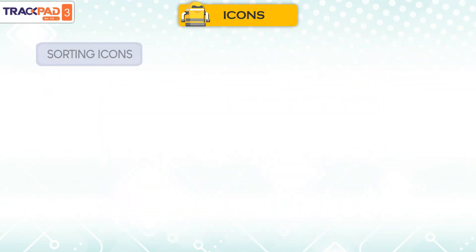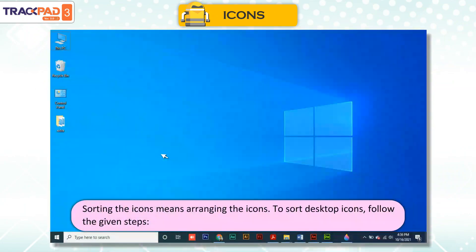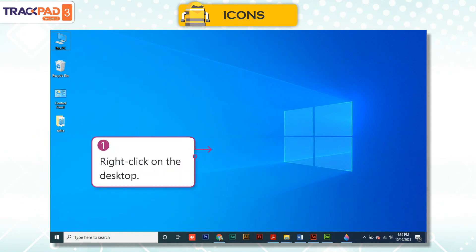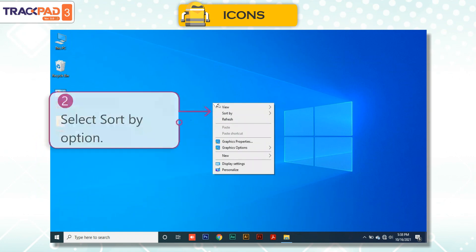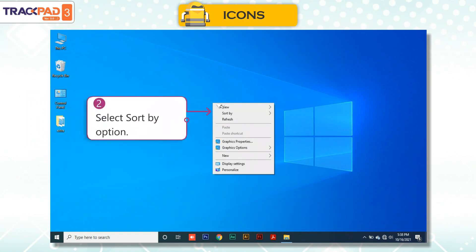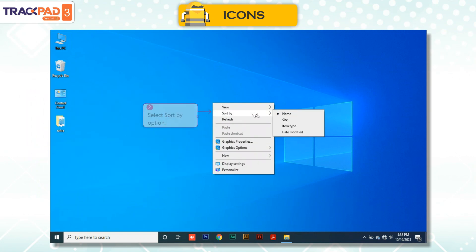Sorting Icons. Sorting the icons means arranging the icons. To sort desktop icons, follow the given steps. First, right-click on the desktop. Second, select the Sort by option.